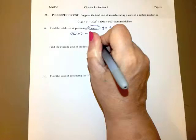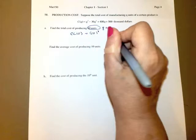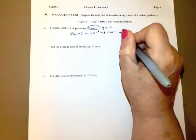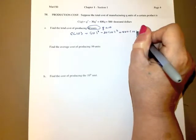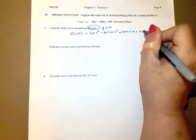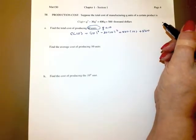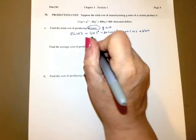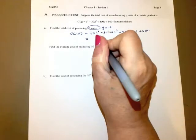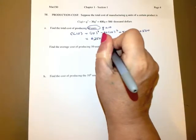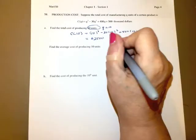This is going to be 10 cubed minus 30 times 10 squared plus 400 times 10 plus 500. And that's going to be in thousands of dollars in the end. And then using my handy dandy little calculator, it comes out to be 2500. Now, the units is thousands.